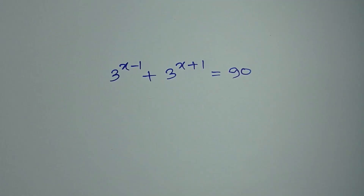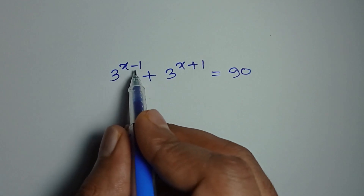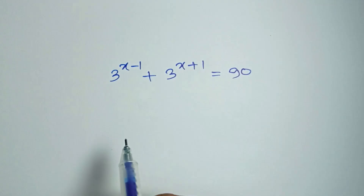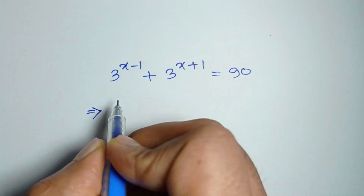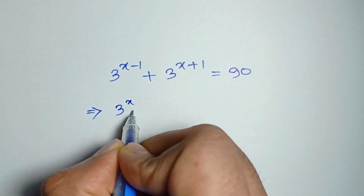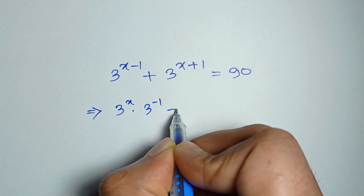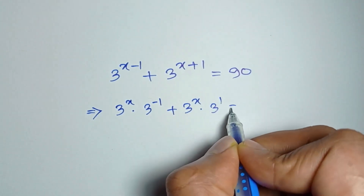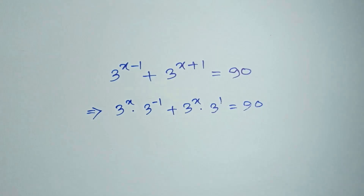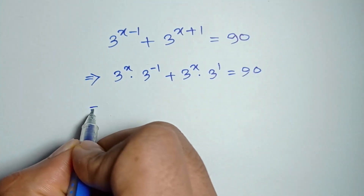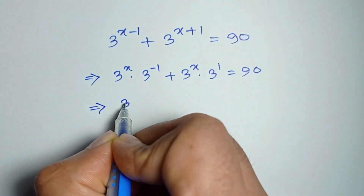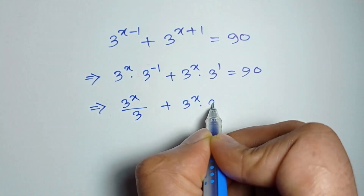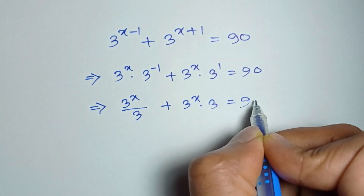Hello friends, we have to solve 3 to the power x minus 1 plus 3 to the power x plus 1 is equal to 90. Or 3 to the power x times 3 to the power minus 1 plus 3 to the power x times 3 to the power 1 is equal to 90. Or 3 to the power x divided by 3 plus 3 to the power x times 3 is equal to 90.